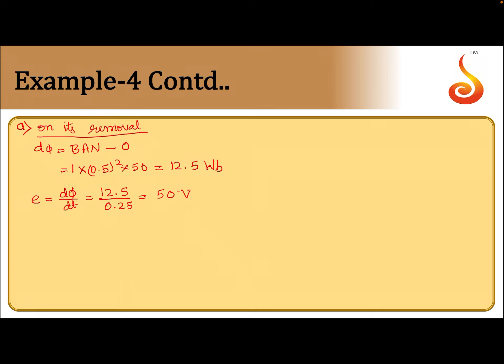We need to calculate thermal energy dissipated. Thermal energy developed should be equal to E square by R into T. So that should be equal to 50 square into 0.25 divided by resistance is given 25. That should be 25 Joule. This is on removal.